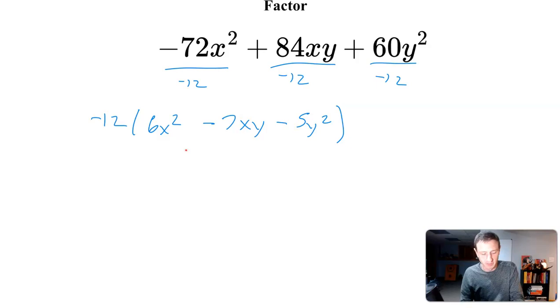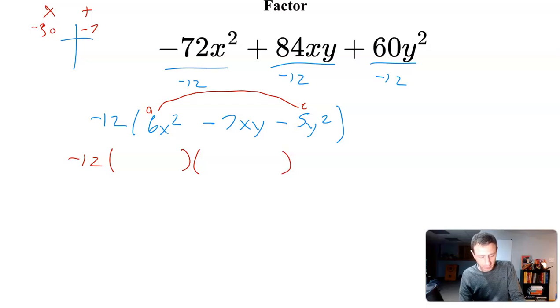What we're looking for when factoring is the AC method. AC method is taking this A term times the C term, and you want two numbers that multiply to that and add up to the middle term of -7. You could do guess and check where this would be X and X, and the last terms would have Y's. You'd have to literally guess and check - you'd guess you need a 6 and 2, multiply into 5. You got to mess around with the numbers. But I'm not a big fan of that method because it could take a while.